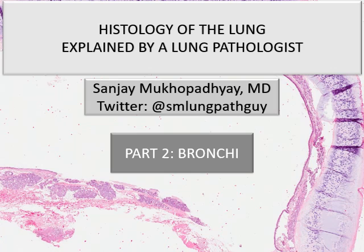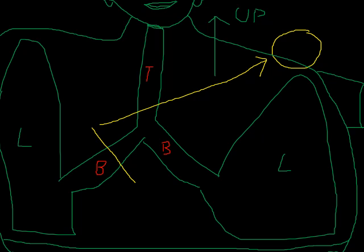Today we're going to talk about bronchi. This is the series on histology of the lung explained by a lung pathologist. You come down from the nose and mouth through the trachea, which is the windpipe, and then the trachea branches into the right and left bronchus. That's where the pipe initially called the trachea is now called the bronchus, at the point called the carina.